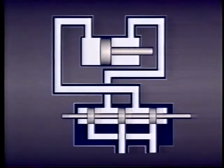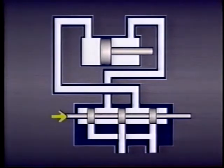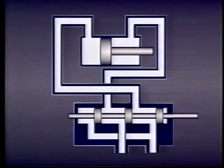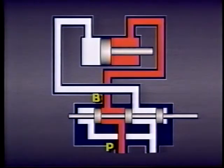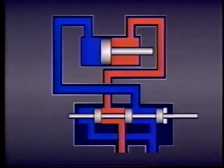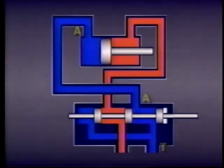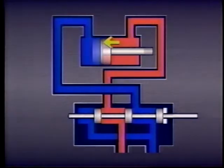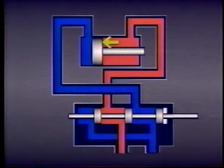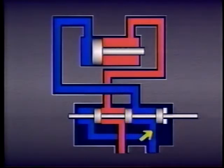When the spool is centered, all four ports are blocked and no flow is possible. However, if the spool is moved in this direction, the passage from the pump to port B on the valve and port B on the cylinder is connected. At the same time, the passage to the tank from port A on the cylinder and port A on the valve is also connected. Fluid flows from the pump through the valve and into port B on the cylinder, pushing the piston in one direction. As the piston moves, fluid is forced out port A of the cylinder through the valve and back to tank.